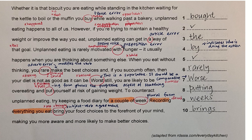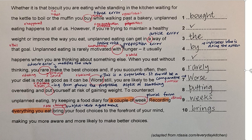'When you eat without thinking, you rare make the best choices.' 'Rare' is the error — circle it. It should be an adverb: 'rarely.' You add L-Y to 'rare.' Why is it an adverb? Because 'rarely' modifies the verb 'make.'